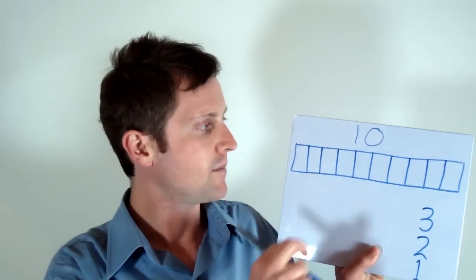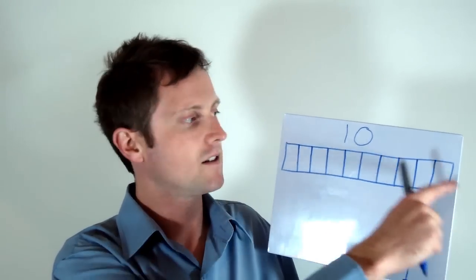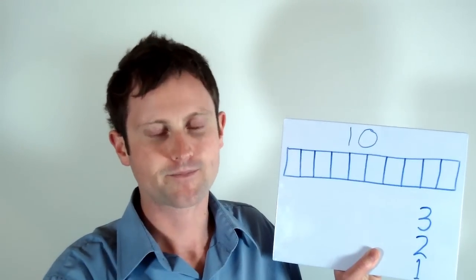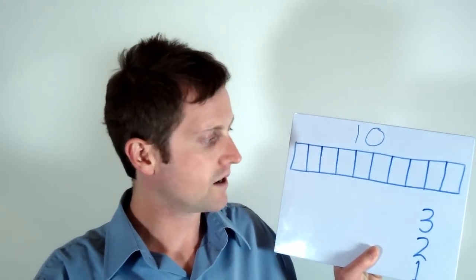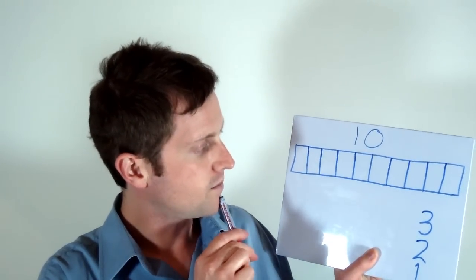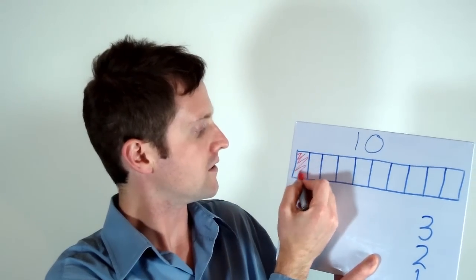Alright so the aim of the game is to be the person to put in the final number and complete the whole group to reach the target number. I'm going to go first. Maybe I'm playing against my class and I'm going to pick a three so I'll colour in three boxes.